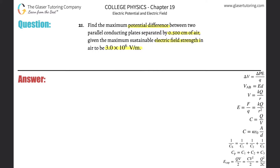So this is a simple calculation. You know that the voltage between two parallel plates, plate A and plate B, will be equal to the constant electric field between those two plates multiplied by the distance between the two plates.